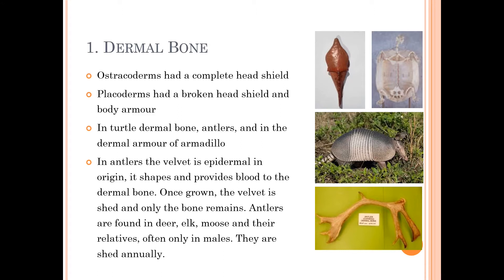The difference between antlers and horns is that antlers are an annual structure — they are shed every year in the animal's life and then grow again. Once grown, they have skin on top called the velvet. At a specific time, that velvet is shed and only the naked bone remains, after which a new antler develops for the next year.